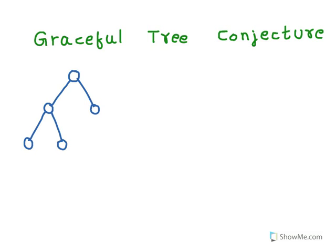Let's say we have the following tree on five vertices. I'm going to label the vertices from one to five. Now I'm going to label the edges with the absolute value of the difference of its endpoints.